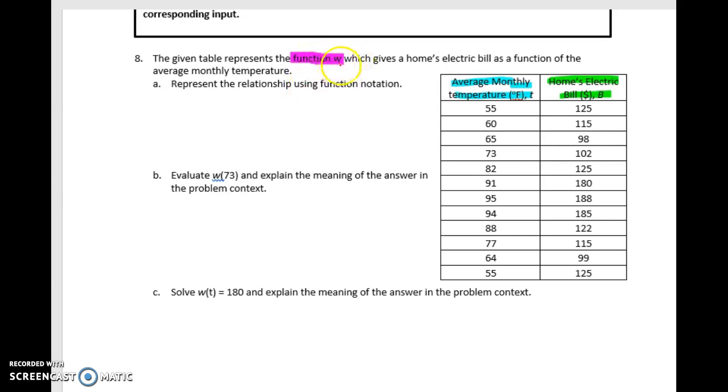We want to represent this in function notation, and we're saying that the function name is W. So we want to start with the output variable, because the output equals whatever our input is dictating to us. And so then we have the function name W of the input variable, which is T. So this is how we would write our function.